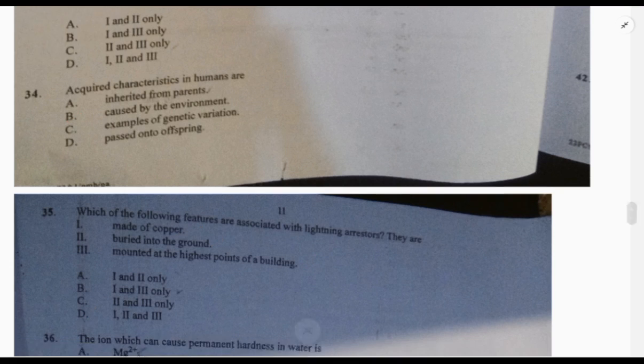Question 36: the ion which can cause permanent hardness in water is the magnesium ion, which is E. 37: steel is preferred to pure iron for constructional work because... I'll go for D, steel is lighter than iron, because it's an alloy which contains carbon. Steel is an alloy of iron and carbon.